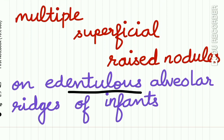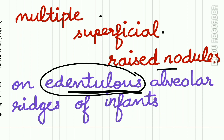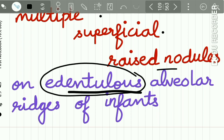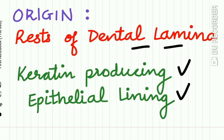What are gingival cysts of newborns? These are multiple superficial raised nodules present on the edentulous alveolar ridges of infants. The origin of the gingival cysts of newborns is from the rests of the dental lamina.